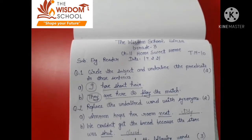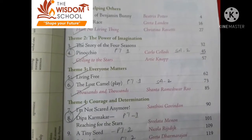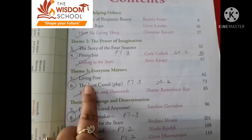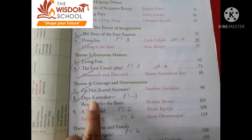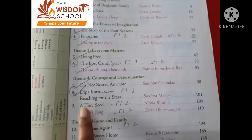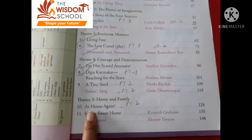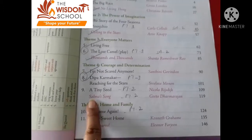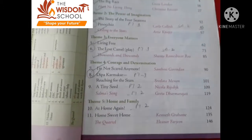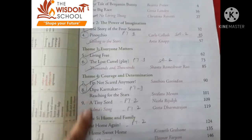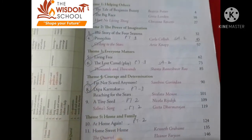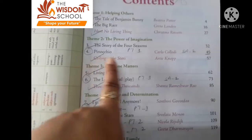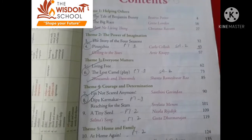Now we will do the revision. Students, the chapters in your syllabus for the final are: Pinocchio, The Lost Camel, Deepa Karmaker Reaching for the Stars, A Tiny Seat, At Home Again, Home Sweet Home, and poems: Salma's Song and The Choir. I have taken all tests, and today we will start the revision again. So today we will do the revision of our chapter Pinocchio. Shall we start?